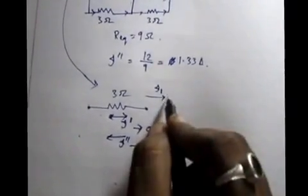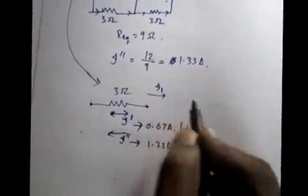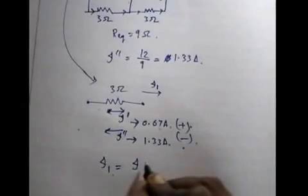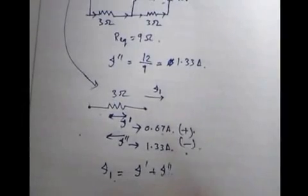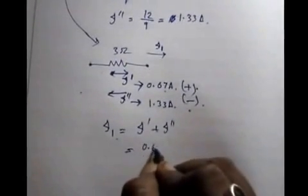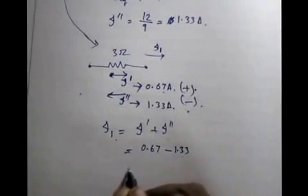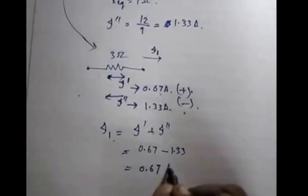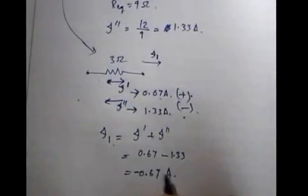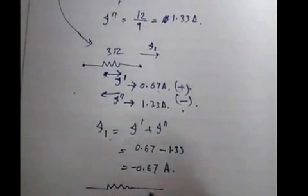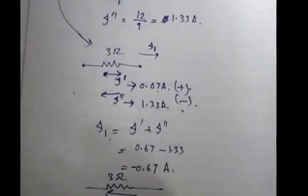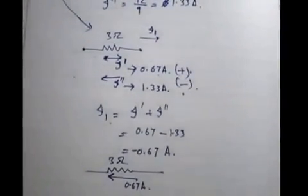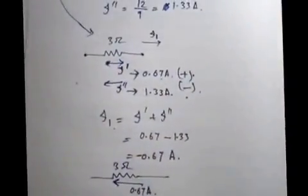Since we initially defined i1 as positive in a particular direction, i' is positive and i'' is negative. The net i1 = i' + i'' = 0.67 − 1.33 = −0.67 ampere. The negative sign means the actual direction of i1 is opposite to our assumed direction, so the current is 0.67 ampere in the reversed direction.